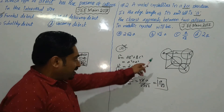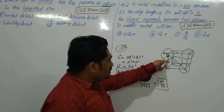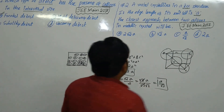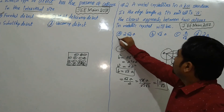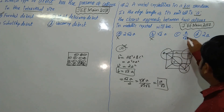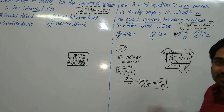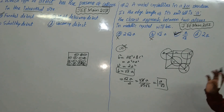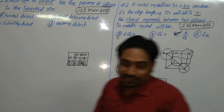So in FCC, the closest approach between particles is A divided by √2. Checking the options — option C, A/√2, is our answer. Like this you can simply solve these problems. Thank you so much!